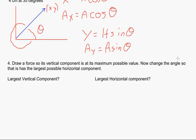Now, let's go down and take a look at the very last one. It says, draw a force so its vertical component is its maximum possible value. Now, change the angle so that it has the largest possible horizontal value. So, let's take a look at some forces. And I'm going to draw my x and y axes first. So, there's my x and y axes. Now, the thing you should realize is that when you have a vector, like this one right here, or this one right here, or this one right here.